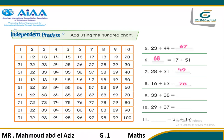Another question: 33 plus 38. Where is 33? That's 33. Plus 38. So we will go down 3 steps — because the tens digit is 3 — landing on 63. The ones digit is 8, so let's count 8 steps: 1, 2, 3, 4, 5, 6, 7, and 8, landing on 71.